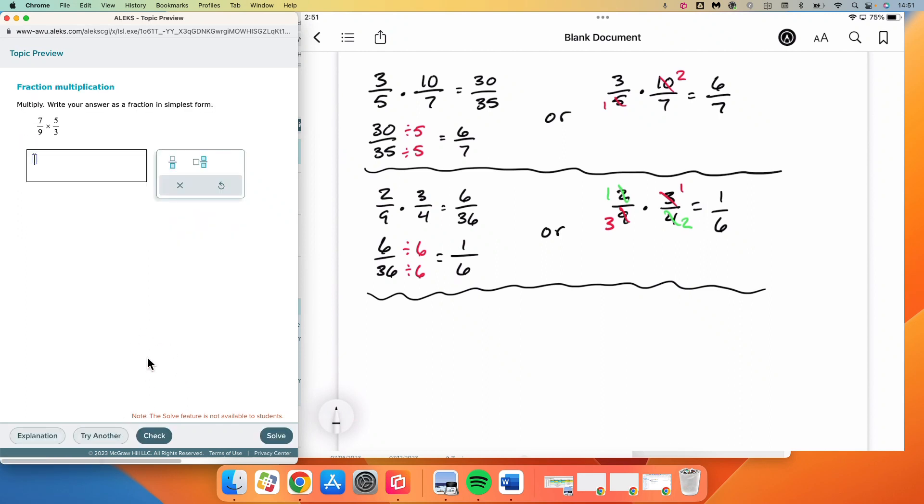Okay, another. We have 7 over 9 times 5 over 3. And so in this one, we will multiply straight across and get 35 over 27.